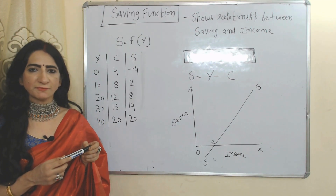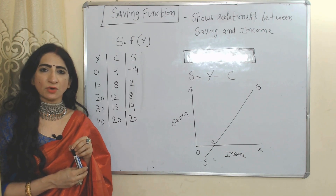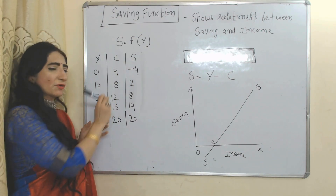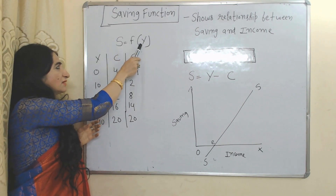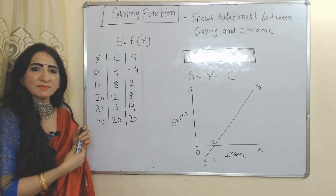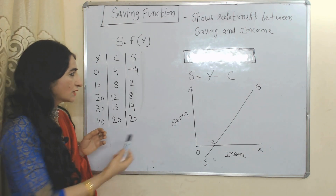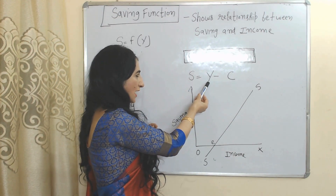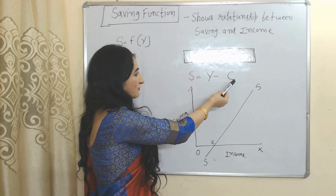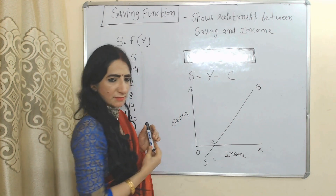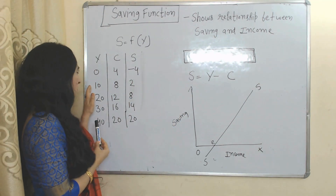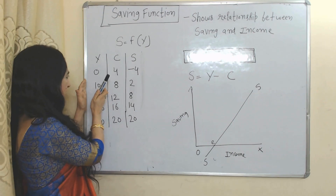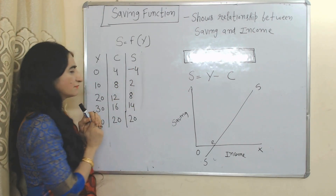Now we will see the saving function. The saving function shows the relationship between income and saving. Saving is a function of income — as income increases, saving also increases. We can calculate saving by subtracting consumption from income: S = Y minus C.